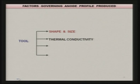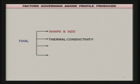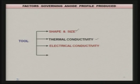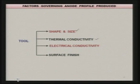Various factors affecting the tool and anode profile: tool shape and size directly affect the anode profile, since the profile produced on the work piece is more or less a replica of the tool. Thermal conductivity of the tool material is important — high thermal conductivity keeps electrolyte temperature rise low. Electrical conductivity of the tool material is important to avoid high resistance and I²R heating of the tool itself. Surface finish of the tool is also important because there is a near reproduction of the tool surface finish on the work piece surface.